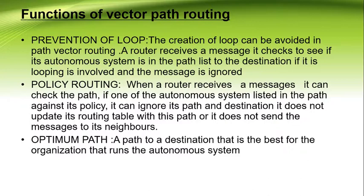Functions of path vector routing: Prevention of loops — loops can be avoided because when a router receives a message, it checks if an autonomous system is already in the path list to the destination; if it is a loop, the message is ignored. Policy routing — when a router receives a message, it checks the path and if any listed autonomous system conflicts with its policy, it can ignore that path and not update its routing table or forward the message. Optimum path — the best path to a destination is chosen by the organization running the autonomous system.